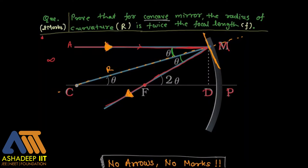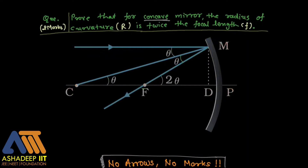Now considering alternate interior angles from class 10: angle AMC gives us theta, and using the alternate interior angles, the external angle at F becomes 2 theta.